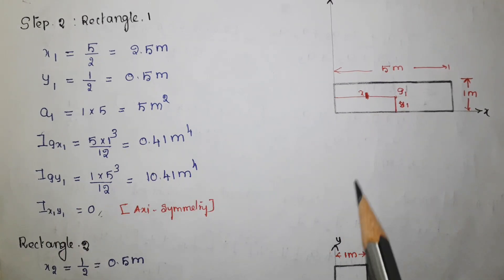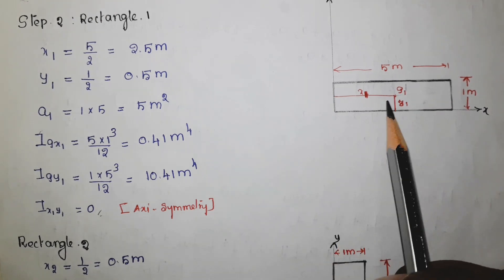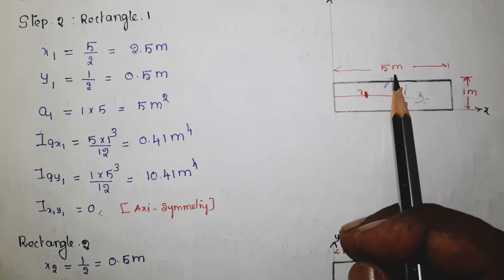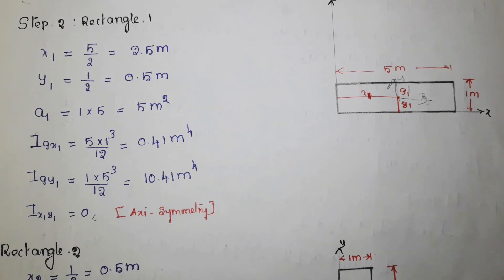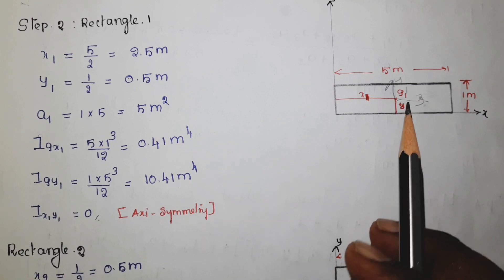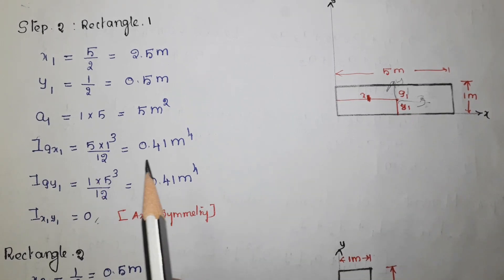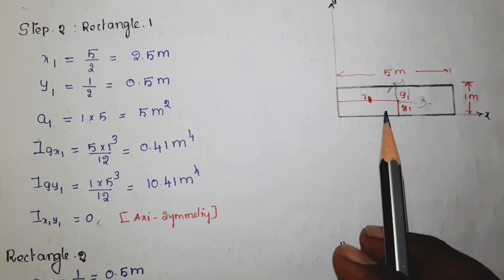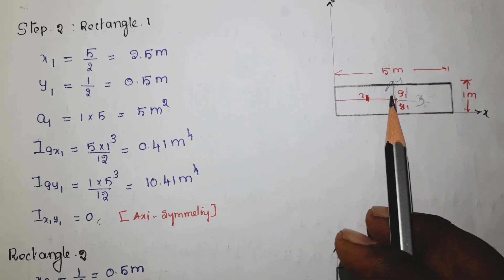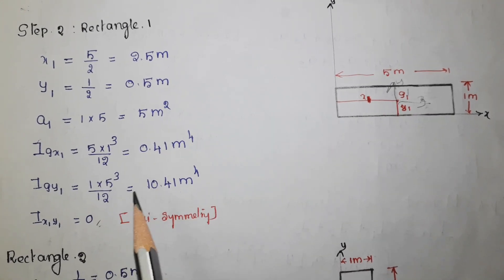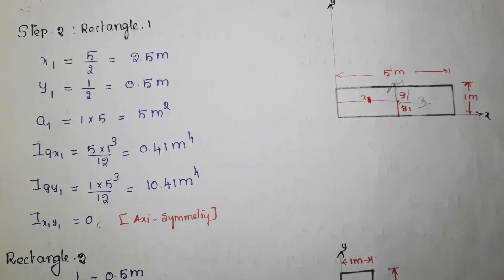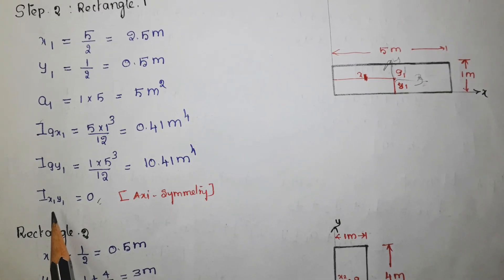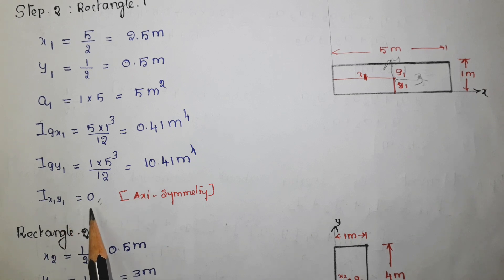Igx1 is the moment of inertia about the axis passing through g1 — the x-axis — which equals bd³ by 12, giving 0.41 meter to the power 4. The moment of inertia with respect to the y-axis, Igy1, equals db³ by 12, giving 10.41 meter to the power 4. The product moment of inertia Ix1y1 is equal to 0.